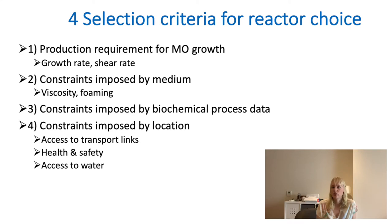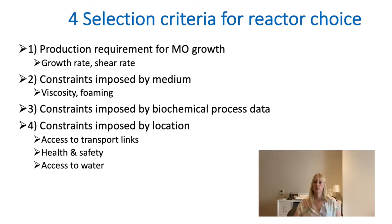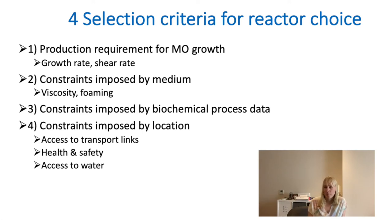The key criteria for reactor selection are interlinked. First, consider constraints imposed by microorganism growth: how fast is growth? Faster growth favors continuous reactors; slower growth may suit other systems. Are cells sensitive to shear? If so, an airlift reactor may be better. Second, consider constraints imposed by the medium: most bioreactor media are aqueous, so viscosity is usually not a problem, but for high-viscosity media such as xanthan gums, a torus-shaped reactor may be more suitable. Third, biochemical process data — pH, temperature tolerance, and growth rate — link back to what the microorganisms prefer.